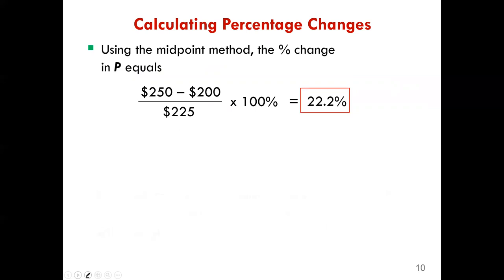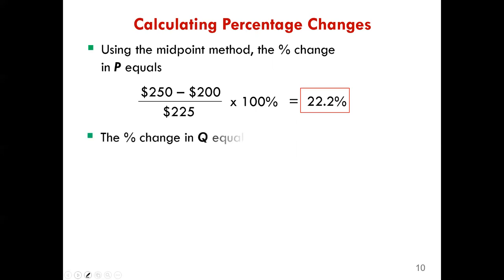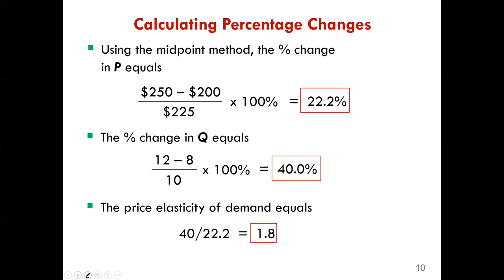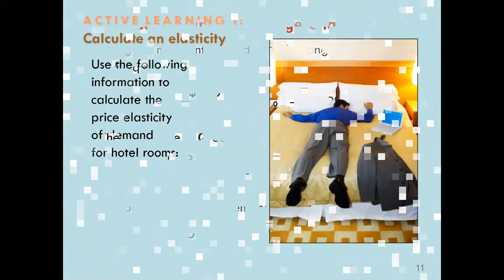Using the midpoint approach, the percentage change in P equals the end value of $250 minus the start value of $200, divided by the midpoint of $225, multiplied by 100, giving a percentage change of 22.2 percent. The percentage change in quantity equals 12 minus 8, divided by the midpoint of 10, giving 40 percent. Our price elasticity is therefore 40 divided by 22.2, which equals 1.8.